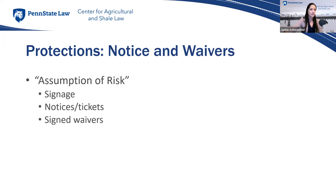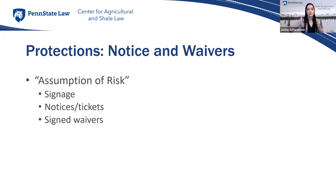Regarding waivers: in order to use assumption of the risk as a defense, the participant needs to actually know they're assuming the risk. You need a structure in place to notify all participants. You can post signs stating all participants assume the risks of the agritourism activity, or hand each participant a flyer or ticket. The best defense you can show a court is a signed waiver — not practical for every operation, but definitely worth considering.